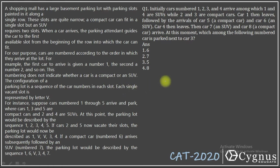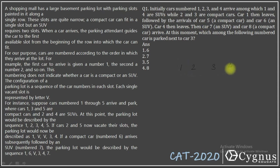Let's directly jump to the question. Initially, cars number 1, 2, 3 and 4 arrive, among which 1 and 4 are SUVs. They'll park like this: 1, 2, 3, 4. Cars 2 and 3 are compact cars, and 1 and 4 are SUVs. So 1 and 4 will occupy two places each.